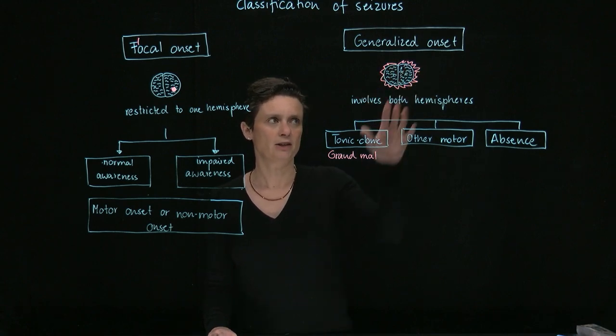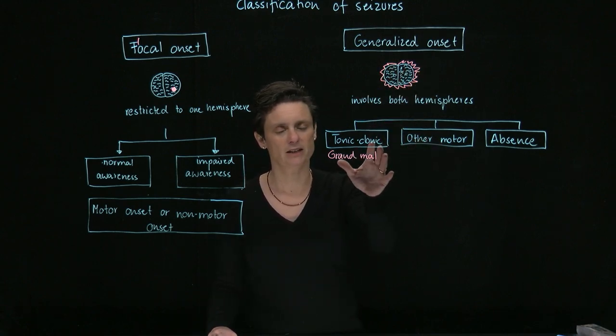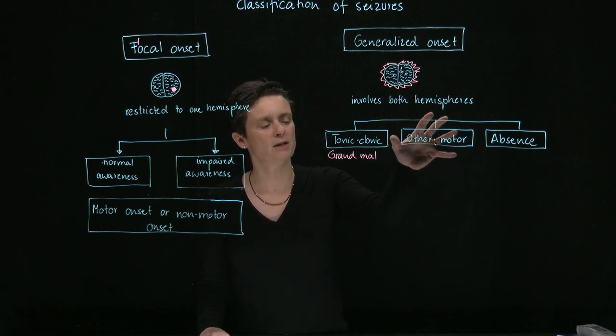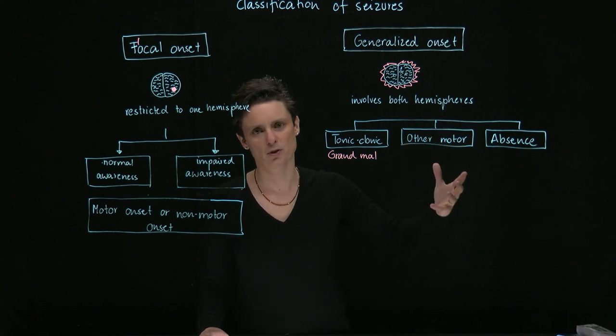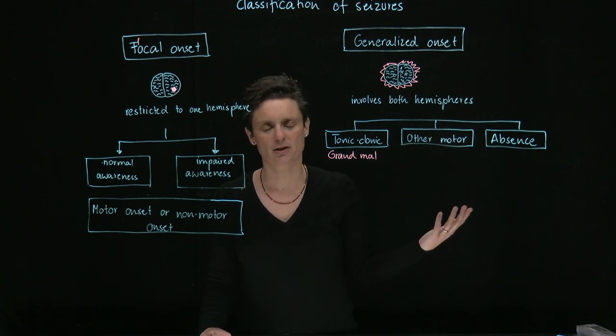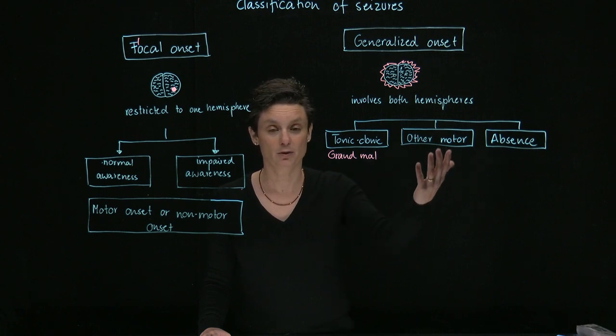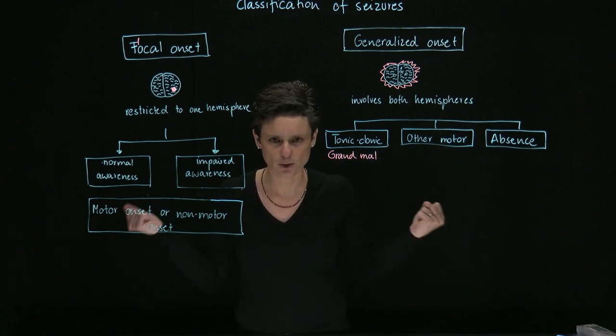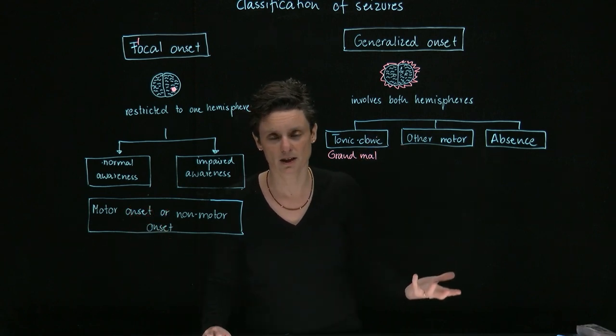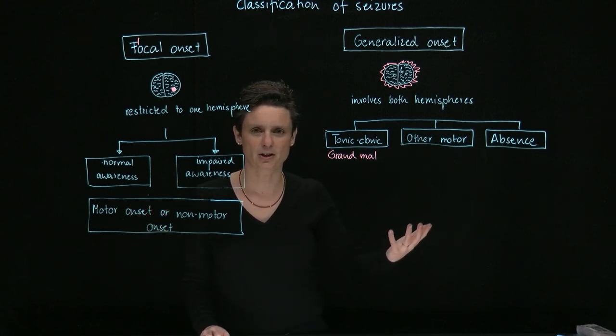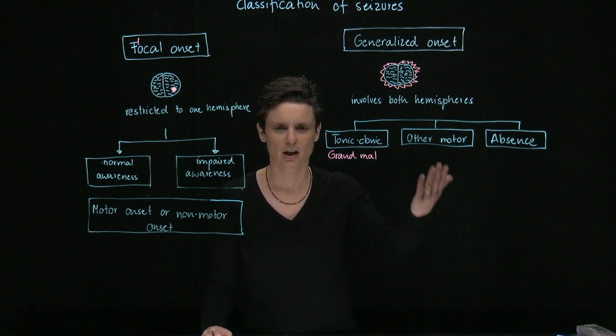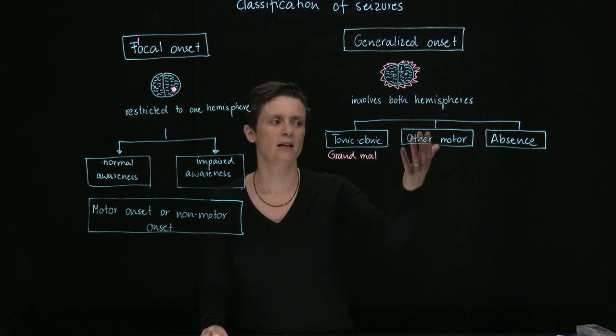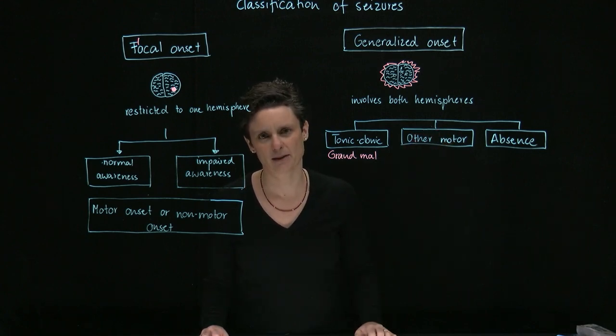Now generalized onset seizure can also fall into a separate category if they don't follow this pattern tonic-clonic, we put them into the category other motor generalized onset seizure. And this could include, for example, seizure types that have only a tonic phase, so only the whole body stiffness, that's a seizure, or only a clonic phase. Or some patients also might experience an atonic seizure, which means that you lose all muscle tone and just fall to the ground. This would fall into the category other motor.